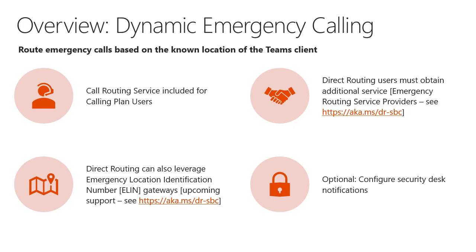In direct routing deployments, we can also leverage what is known as ELIN, or emergency location identification number gateways. This is upcoming support as of this recording. You can check the aka.ms link to see the currently listed ELIN gateway options. Last but not least, we have the ability to configure security desk notifications — an optional component that bridges in a local security desk when a user makes an outbound emergency call.